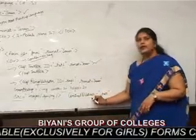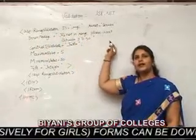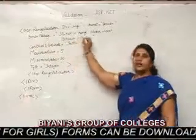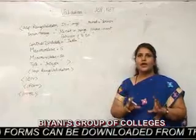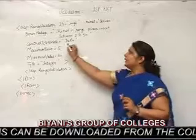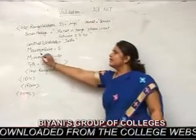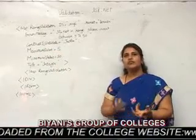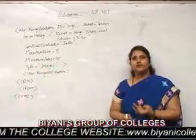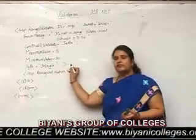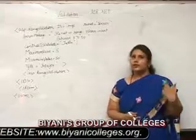Then control to validate defines which control is being validated. We take asp:RangeValidator id equals to rng, runat equals to server. The error message is: it is not in range — please insert between 5 to 50. Control to validate defines which text box is controlled, using that text box id. The id is compulsory in all tags. Maximum value defines the maximum value to insert in the box, and minimum value is set similarly. Type is equals to integer — the three types are integer, alphabetics, and numerics. The asp:RangeValidator tag is then closed, followed by the div tag, form tag, and HTML tag closing all tags.